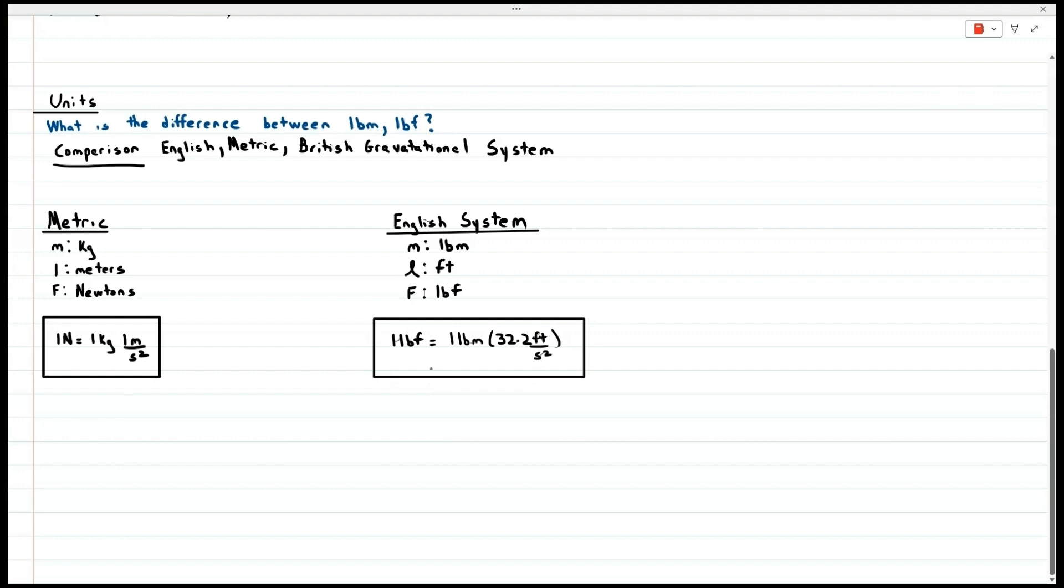Now if you can take nothing else away from this video, the reason that people struggle with the English system is that gravity here is included in the definition. We can see that 32.2 above, it looks different from the metric system. That difference is what we're going to weed out in this video.